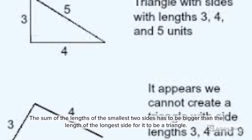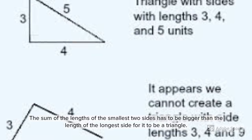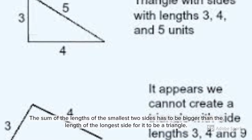The sum of the lengths of the smallest two sides has to be bigger than the length of the longest side for it to be a triangle.